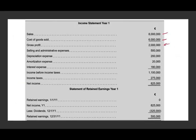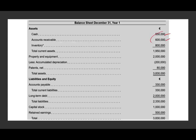The income statement shows sales minus cost of goods sold giving gross profit, minus selling, depreciation, amortization, and interest giving income before taxes, then taxes, resulting in net income in euros. The retained earnings statement: beginning balance was zero, plus net income of €825,000, minus dividends, gives ending retained earnings of €500,000. The balance sheet includes cash and receivables (monetary assets), inventory at cost using FIFO, PP&E, a patent of €80,000, accounts payable, long-term debt, capital stock, and retained earnings — total assets and liabilities/equity of €3,830,000.